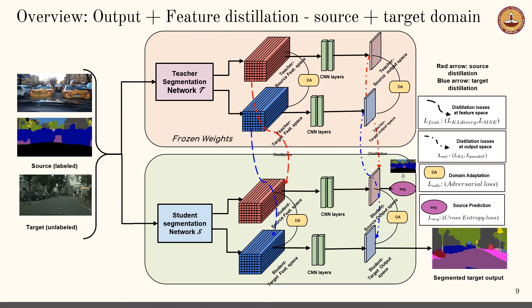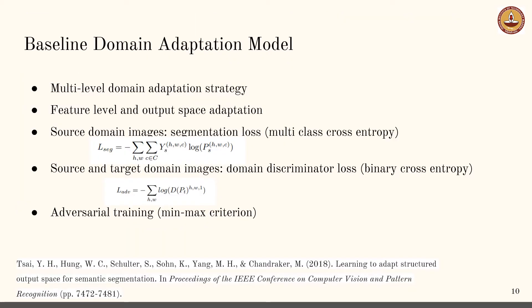Two modes of distillation are designed at each level: source distillation shown in red arrows and target distillation shown in blue arrows. It is important to use a good domain adaptation strategy for both the teacher and the student networks. We use the multi-level domain adaptation strategy to train both networks. Segmentation loss, i.e., cross-entropy loss, is applied on images from the source domain. The discriminators are optimized with a binary cross-entropy loss applied on images from both domains. Training proceeds in an adversarial manner.